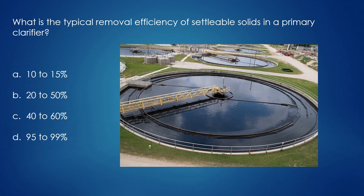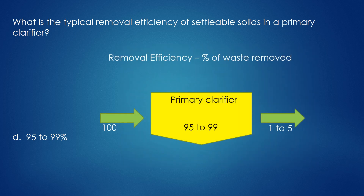What is the typical removal efficiency of settleable solids in a primary clarifier? 95-99%. Removal efficiency is the percentage of waste removed from the wastewater. For example, if 100 settleable solids entered the primary clarifier, 95-99 of them settled to the bottom and were removed. Only 1-5 settleable solids left the primary clarifier in the effluent.